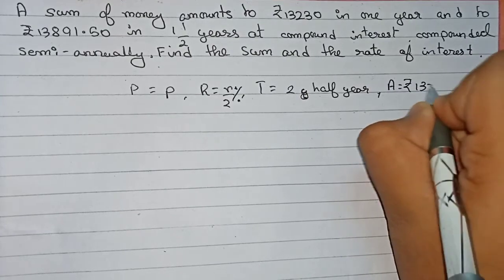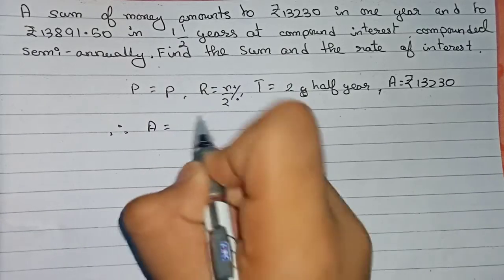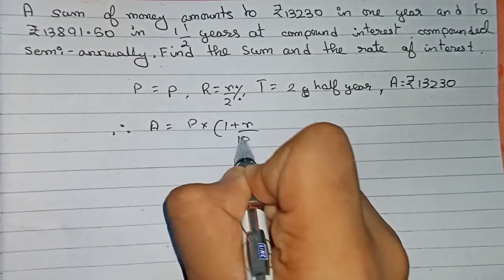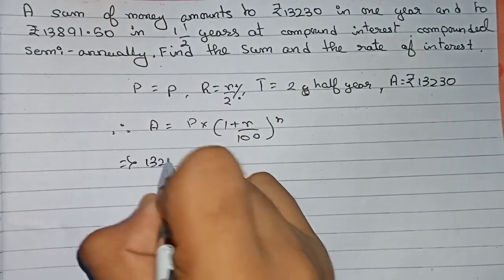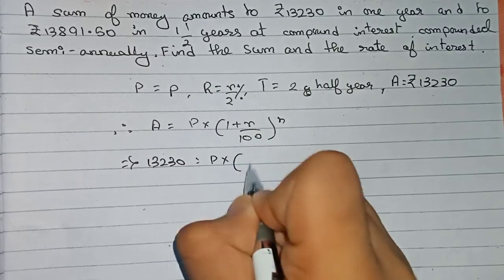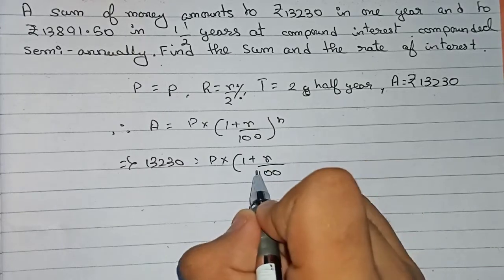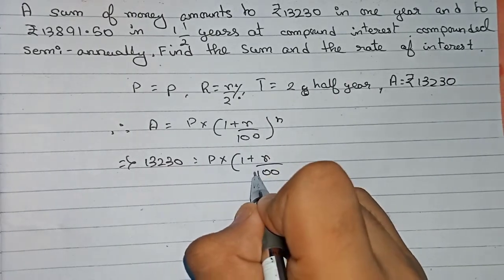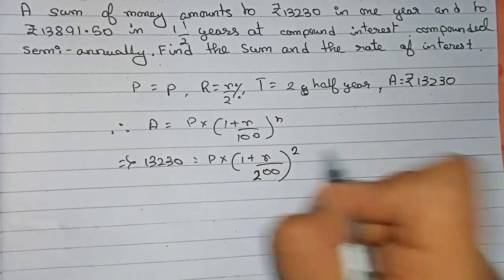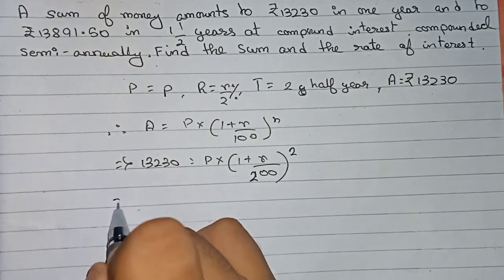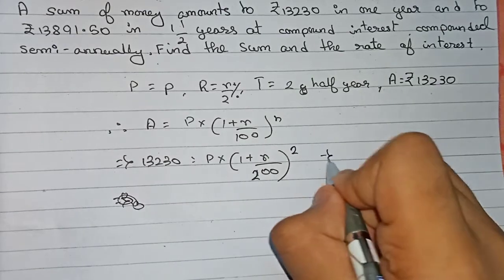The amount given is 13,230. Using the compound interest formula: Amount equals P into one plus r by 100 to the power n. Substituting the values: 13,230 equals P into one plus r by 200, to the power 2. This is our Equation Number 1.